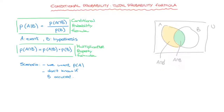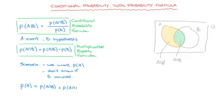Since these two events are mutually exclusive — meaning they can't occur simultaneously, it's one or the other but not both — the probability of event A occurring is equal to the sum of the probabilities of each of these two events occurring. In other words, the probability of A is equal to the probability of A and B plus the probability of A and not B.